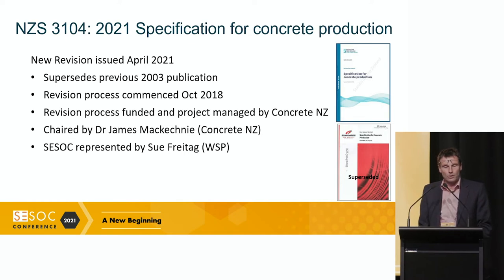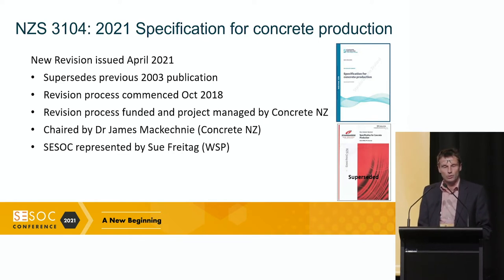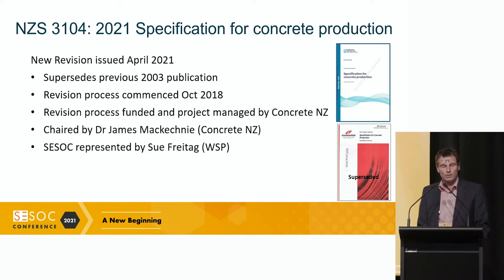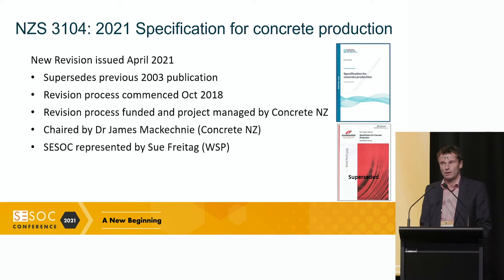This new specification for concrete production was issued April 2021. It supersedes the previous version from 2003. The revision process commenced in October 2018, so it took about two and a half years — a bit longer than anticipated, as any standards process is prone to. What's a little bit different is that Concrete NZ funded and project managed the revision, partly to manage costs. This meant we did all the convening and meetings and also all the editing of the document — a little bit different to how other standards processes typically run, where Standards New Zealand do all the meeting convening and editing as it progresses.